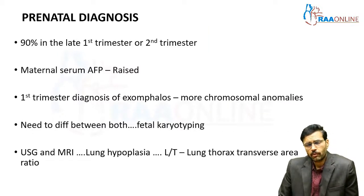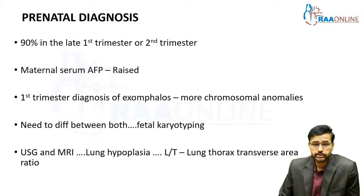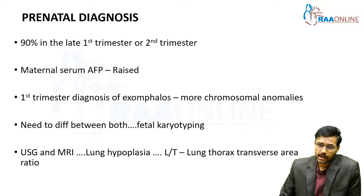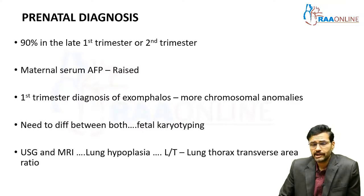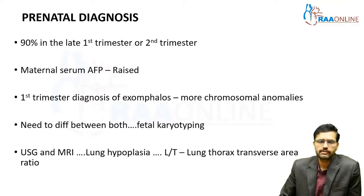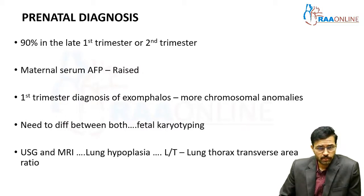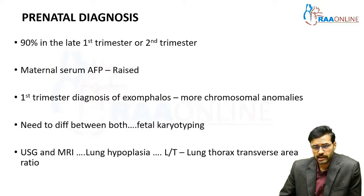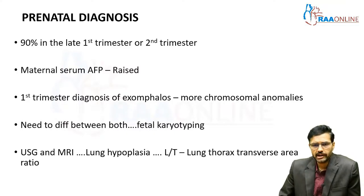How do you diagnose these abdominal wall defects antenatally? It is very much possible — ninety percent of cases can be detected in the late first trimester or second trimester. Maternal serum alpha-fetoprotein levels can be raised in the presence of abdominal wall defects like exomphalos or gastroschisis. First trimester diagnosis of an exomphalos must raise the suspicion of chromosomal anomalies, and it warrants doing fetal karyotyping to look for any chromosomal anomalies.